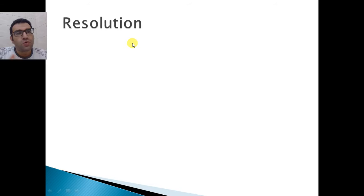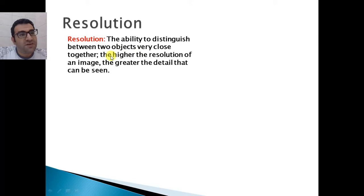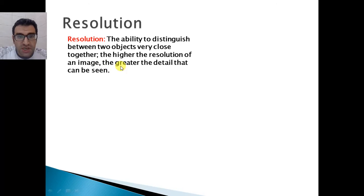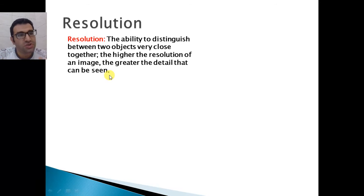Talking about resolution — what is resolution? Resolution by definition is the ability to distinguish between two objects that are very close together. The higher the resolution of an image, the greater the detail that can be seen. So resolution is directly related to detail: if we have high resolution, we have high detail.